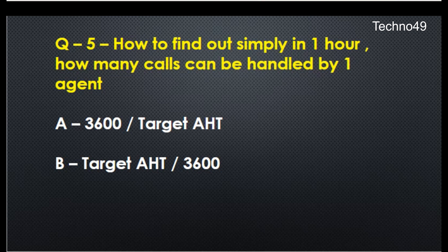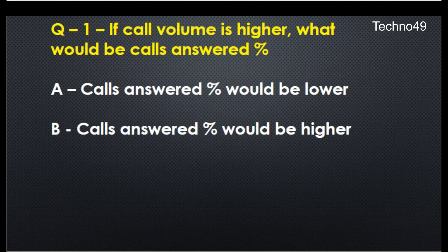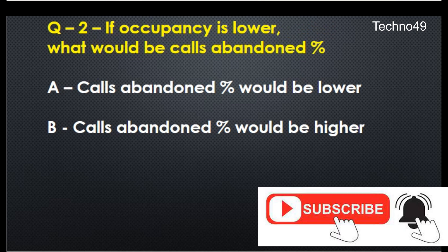Now let's see the answers. For the first question — if call volume is higher, what would the call answer percentage be — the call answer percentage would be lower, because we would be having back-to-back calls and calls waiting. The headcount may not match the forecasted call volume, so fewer calls get answered and the call answer percentage would be reduced.